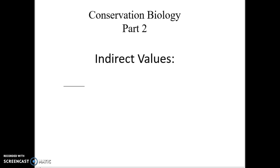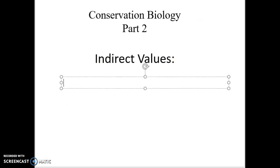In the last lecture we talked about the value system — direct value, monetary value. Can we put dollar tags on things? That sometimes incentivizes us to keep them around. The challenge is if we don't put a dollar on it, sometimes we say we can't identify a dollar value with that chunk of woods so we're going to chop it down. So what we now want to talk about are what we call indirect values.